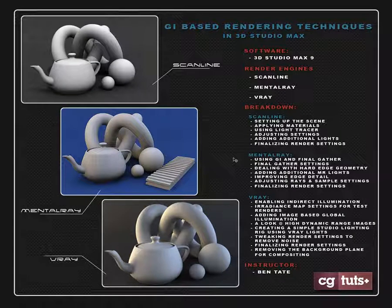Hey, this is Ben Tate for CGTuts and in this tutorial we're going to be looking at a few different techniques to do a basic global illumination render inside of Max, also referred to as a clay render or even an ambient occlusion render. These are three different renders here that are the final result of each section of this tutorial. A lot of people out there are curious on how to get this kind of render for a model presentation or whatever, so we're going to look at how to do this in three different renders.